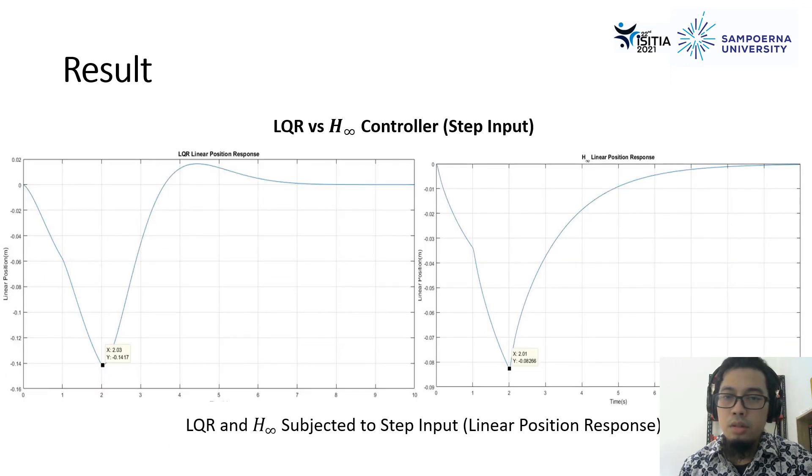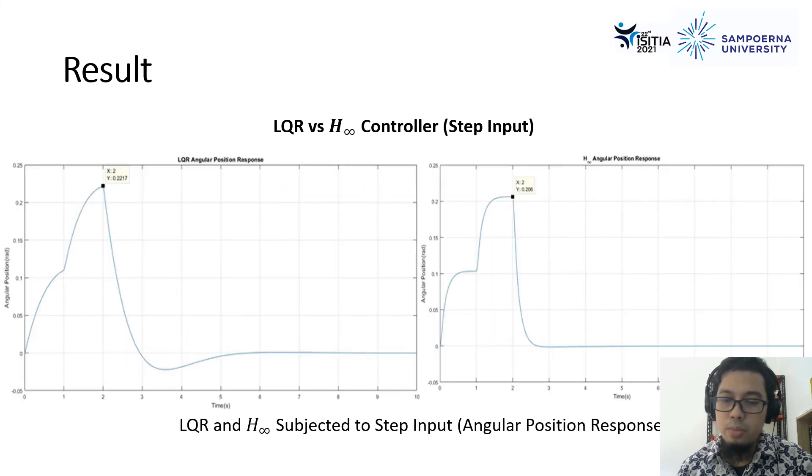Now, for the step input LQR and H-infinity subject to linear position response, here we get that H-infinity has 64.58% less maximum rather than LQR. This notes that the H-infinity is still superior rather than LQR. For the angular position response,